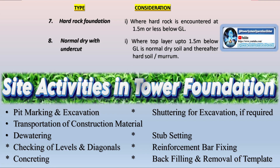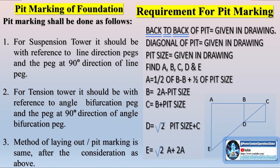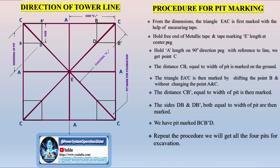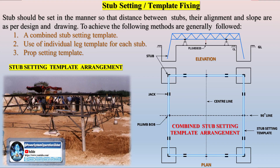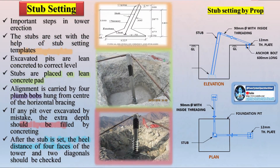The timing of the detailed survey is important because it allows for early identification of potential challenges that could delay construction or increase costs. If significant issues are discovered — such as unstable soil, unanticipated land use changes, or unexpected environmental obstacles — the route may need to be adjusted before finalizing the design. Once the detailed survey is complete and the data has been analyzed, the project can move on to soil investigation and foundation design. The soil investigation phase occurs immediately after the detailed survey and is crucial for ensuring that the transmission line towers are properly supported by stable and reliable foundations.